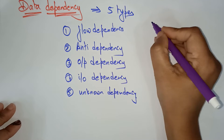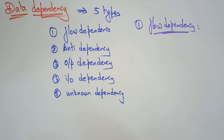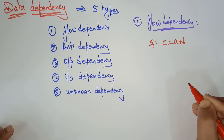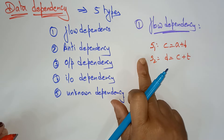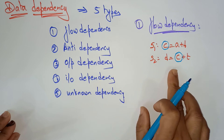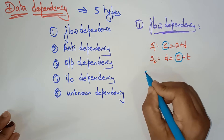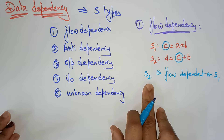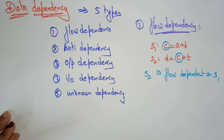The first one is flow dependency. Let me take two statements: S1 is C = A + B, and S2 is D = C + D. If you observe here, after executing S1 only, S2 needs to be executed. The output C from S1 is used in statement S2. So S2 is flow dependent on S1 — at least one output of S1 is used as input to S2.